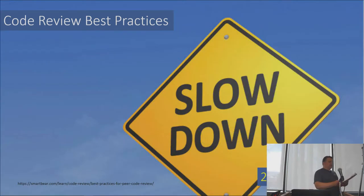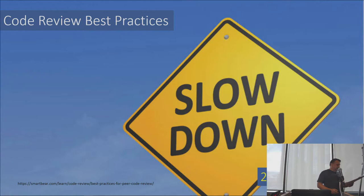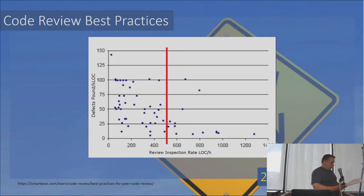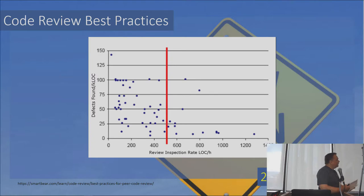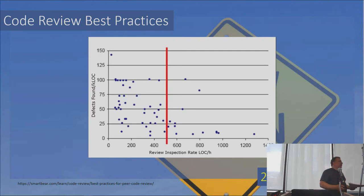Next: slow down. The faster you blow through the code review, the more defects you're going to miss. From the data, the found defect density drops off right around 500 lines per hour. Reviewing at 1,000 lines per hour is only slightly better than not doing a review at all. For reviewers, any change worth reviewing is worth spending at least five minutes on — even one-line changes can introduce defects.